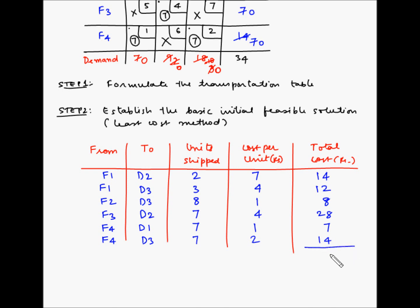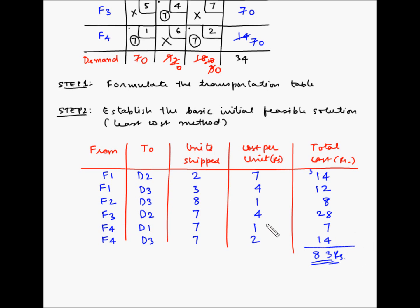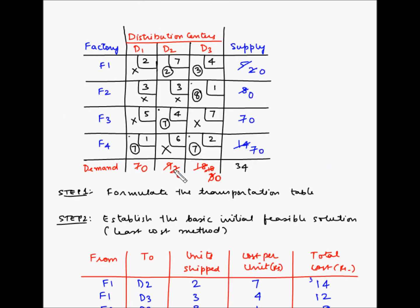Adding all costs: 14 + 12 + 8 + 28 + 7 + 14 = 83 rupees. So 83 rupees is the total transportation cost based on this initial feasible solution obtained using the least cost method.